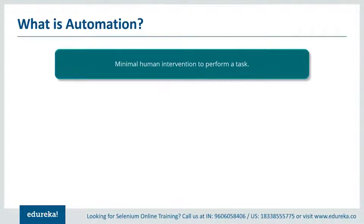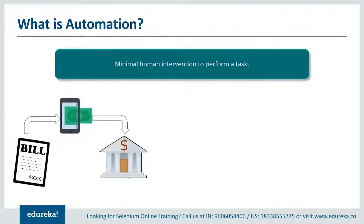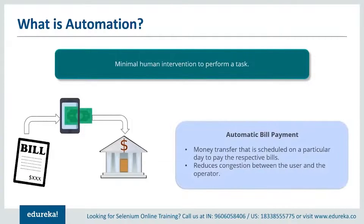Consider this example: suppose you want to pay a bill and the due date is very near, but you cannot physically go there to pay it. Every time you make a transaction, you need to add details so the system acknowledges it's a genuine user. Technology has improvised so much that there is an option called automatic bill payment, where the amount is directly deducted from the account on a date chosen by the user. Isn't it interesting the way automation has evolved?